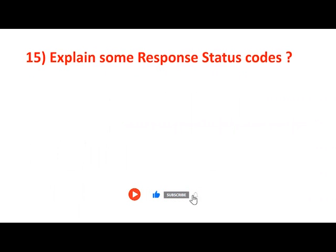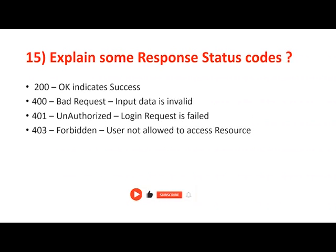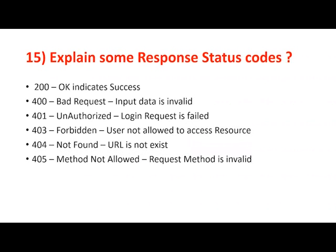Question: explain some response status codes. 200 indicates OK — that's success. 400 is Bad Request — your input data is invalid. 401 is Unauthorized — login request failed. 403 is Forbidden — you logged in successfully but have no access to resources. 404 is URL not found or does not exist. 405 is Method Not Allowed — for example, you made a GET request but the program expects POST. 500 is Internal Server Error or an exception at the application side. These are the most commonly used response status codes in real time.